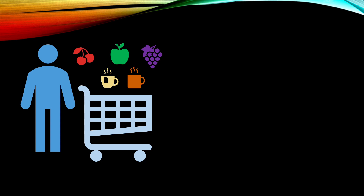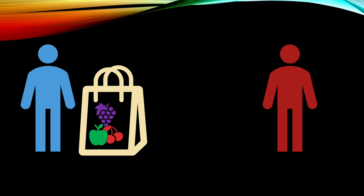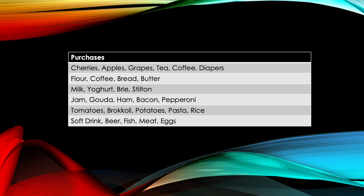Let's assume Bob goes grocery shopping. He buys coffee, tea, cherries, apples, grapes, and diapers. On his way home, the top items in his bag are the fruits, and Tom, his neighbor, sees Bob and these top items. If the supermarket Bob went to were to publish an anonymized database of all purchases that occurred on that day, it would be easy for Tom to find out Bob's complete shopping list, and hence conclude that Bob's wife is pregnant.